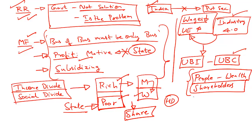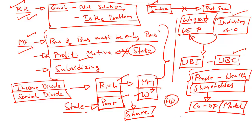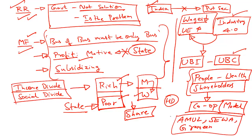The UBC model is already followed in cooperative societies. The author advocates the cooperative model of economic development, citing examples of successful institutions such as Amul, Seva, and Grameen. He says this model reduces the income and social divide and provides for equal shareholding and sharing of wealth among the people.